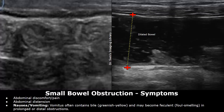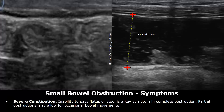The first symptom is abdominal discomfort or pain — it is a non-specific sign. Abdominal distension can strongly indicate a small bowel obstruction. A greenish-yellow vomitus or foul-smelling fecal vomitus is often seen in patients with small bowel obstruction. Severe constipation can also strongly indicate small bowel obstruction.